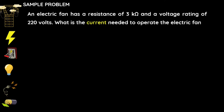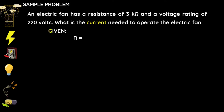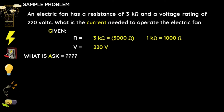Next sample problem: an electric fan has a resistance of 3 kilo-ohms and a voltage rating of 220 volts. What is the current needed to operate the electric fan? The given are: resistance = 3 kilo-ohms, which is equivalent to 3,000 ohms, because 1 kilo-ohm equals 1,000 ohms. Voltage = 220 volts. What is asked: we will be computing for the current.